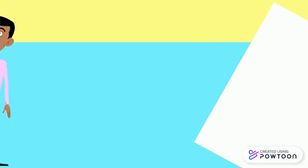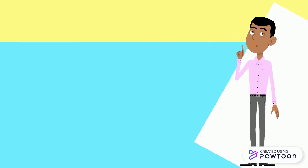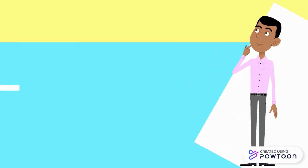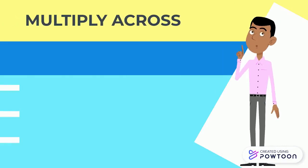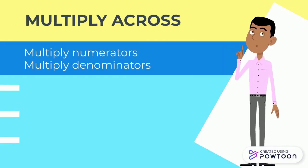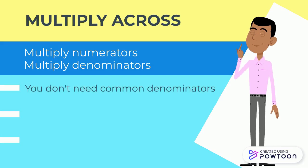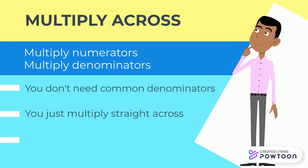To multiply two fractions, you just multiply across. You multiply the numerators with each other and you multiply the denominators with each other. You don't need to find common denominators. You just multiply straight across.